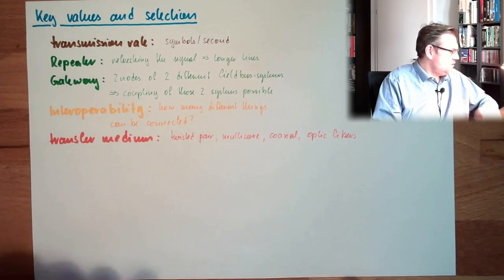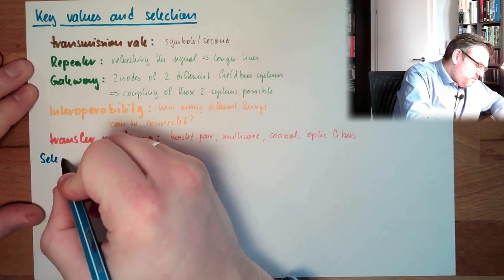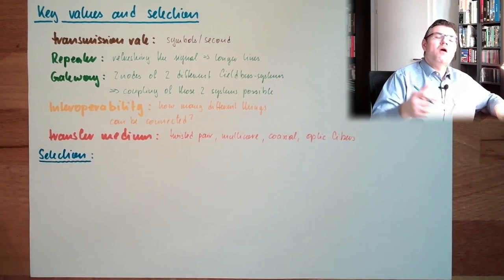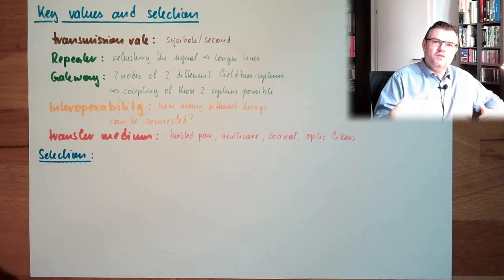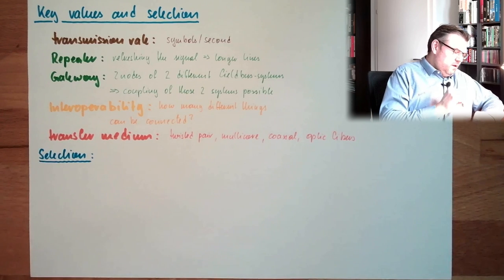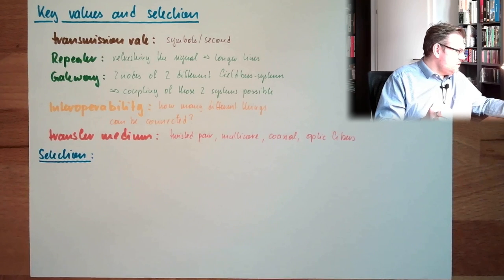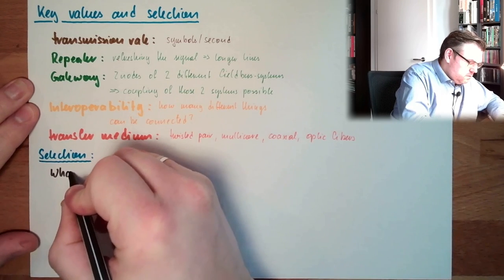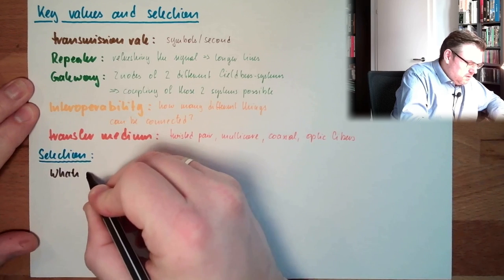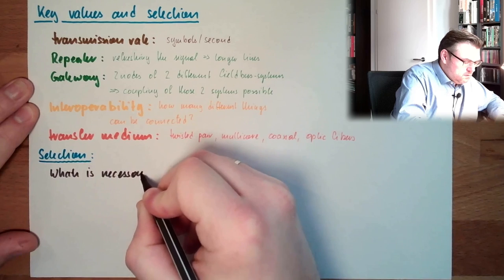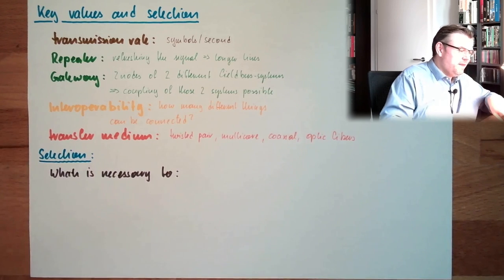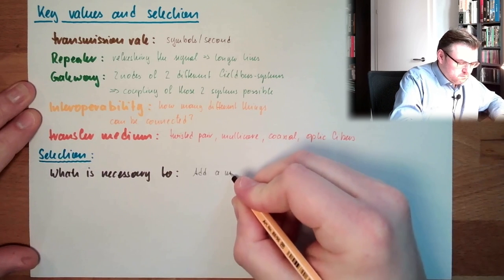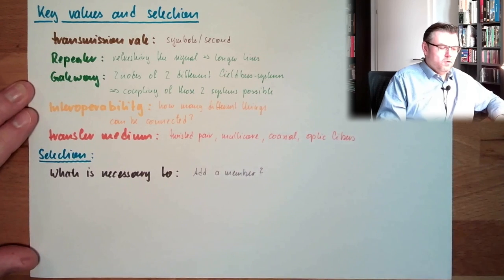And now let's come to the selection. What has to be done to select a proper, suitable for our application, fieldbus system? We have to ask several questions. One question is, what is necessary, what is necessary to add a member? What is necessary to add a member?